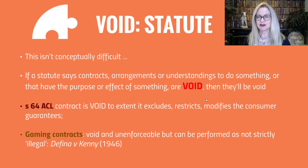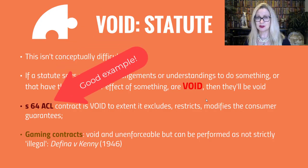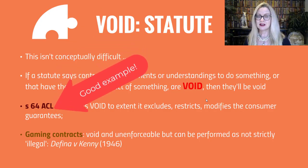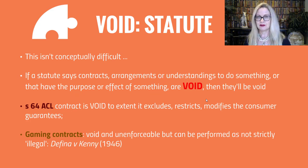Looking first at contracts that are void via statute — not terribly hard and actually fairly obvious. If a statute says that contracts, arrangements or understandings that do something or have the purpose or effect of something are void, they're going to be void. So section 64 of the ACL, the Australian Consumer Law, says that a contract is void to the extent that it excludes, restricts or modifies the consumer guarantees. A good example of a contract being void via statute.